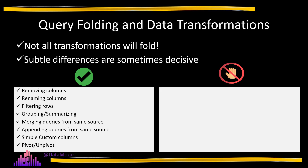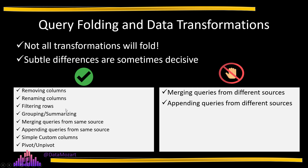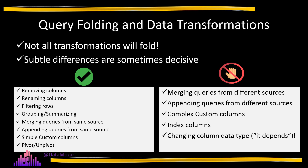On the other hand, some transformations will prevent query folding: merging queries based on different sources, appending queries based on different sources, adding custom columns with complex logic or using M functions that have no counterpart in SQL, and adding index columns. Changing a column data type is a typical 'it depends' case — I'll show you in a future video what it depends on, but keep in mind that changing a column data type can be both a foldable and non-foldable transformation.